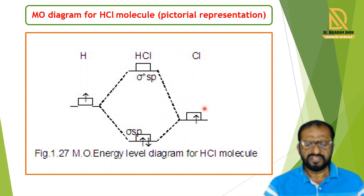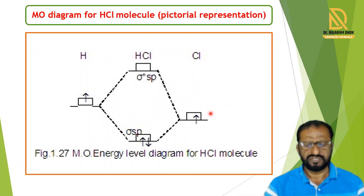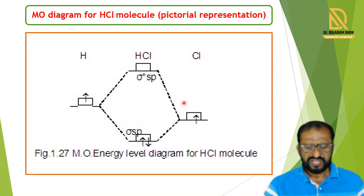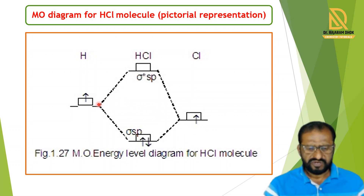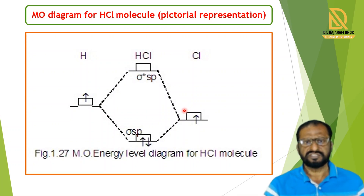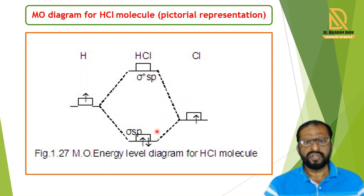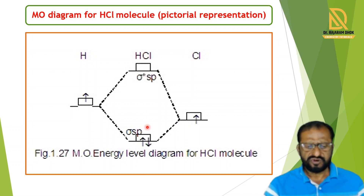Only the 1s orbital of hydrogen and the 3px atomic orbital of chlorine have matching symmetry, geometry, and energy, so these atomic orbitals combine. The 3px atomic orbital of chlorine has lower energy than the corresponding hydrogen atomic orbital, so in the diagram the chlorine atomic orbital is shown at the lower side. When their wave functions combine in-phase, the bonding molecular orbital is obtained, which we call sigma sp, since it is formed by the combination of the 1s and 3px orbitals.